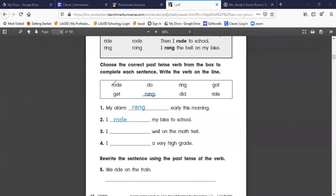Let's cross that one out. Number three: I blank well on the math test. This is in the past tense, not something we're doing right now but what you did, so we are going to write did, D-I-D.